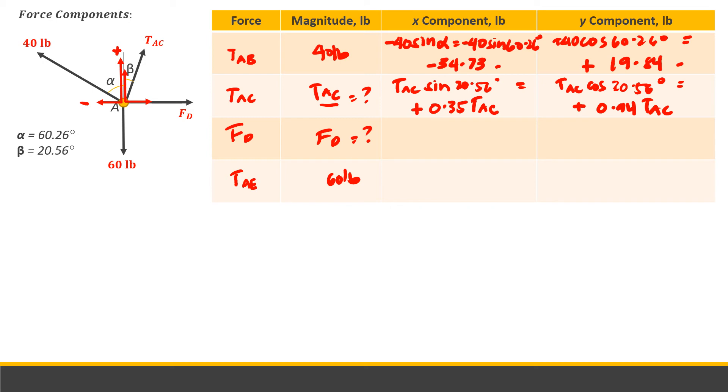FD is in positive x axis, so positive FD in x and 0 for y component. TAE, which is 60 pounds, has 0 for x component and negative 60 for y component. Now we have all our components.